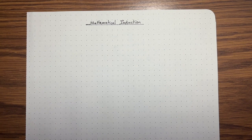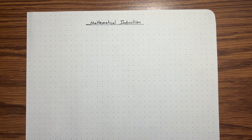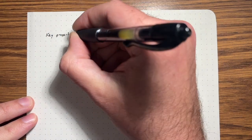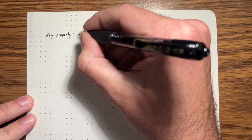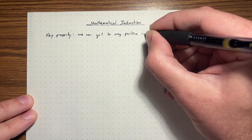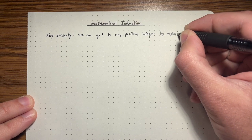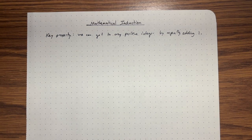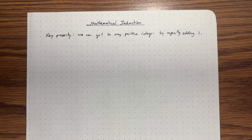This lecture is going to be on mathematical induction. Induction is a key property of the integers — in particular, it's how we really understand the additive structure of the integers. There's a key property of the positive integers: we can get to any positive integer by repeatedly adding one. This seems like a fairly basic observation, but it has some pretty far-reaching consequences. We can use this to prove many non-trivial facts about the integers.